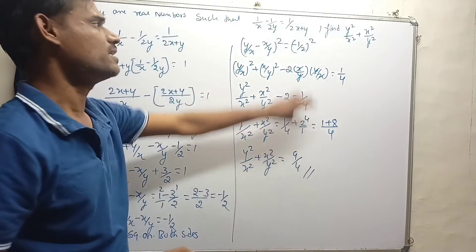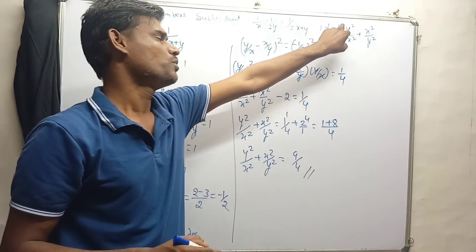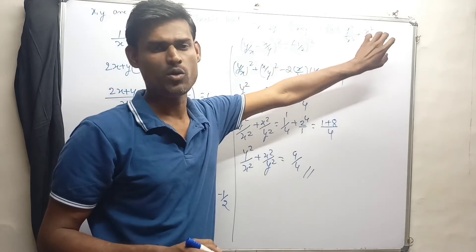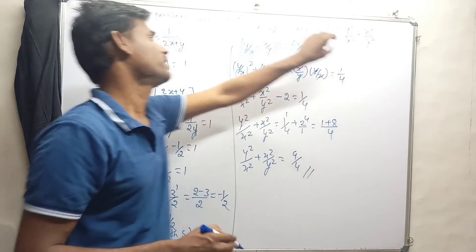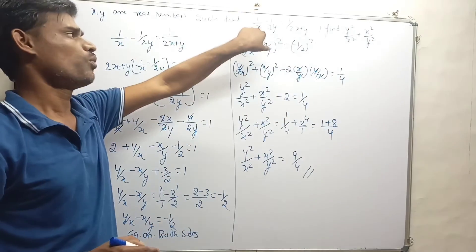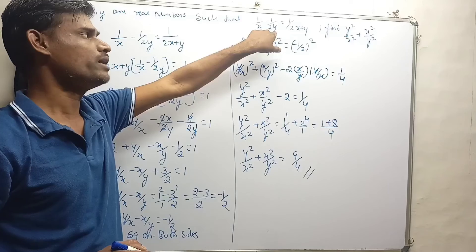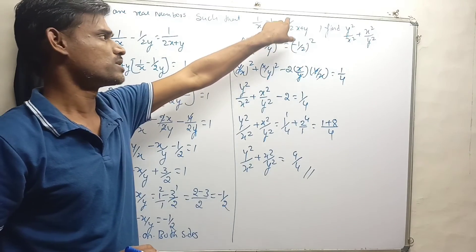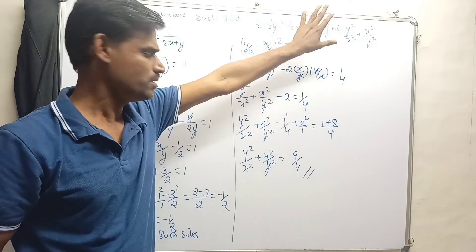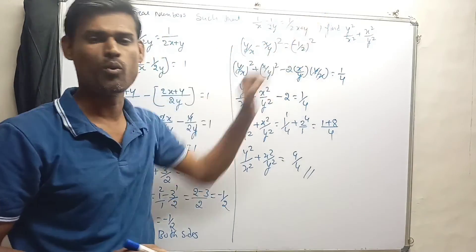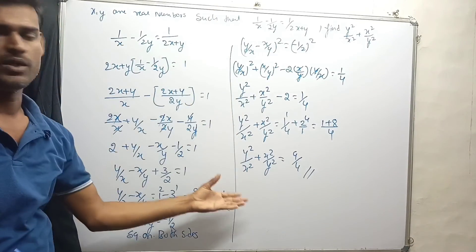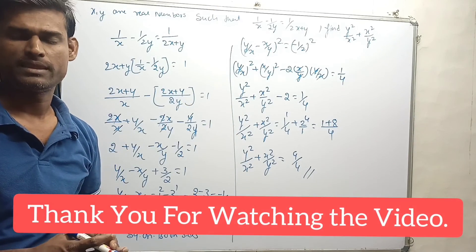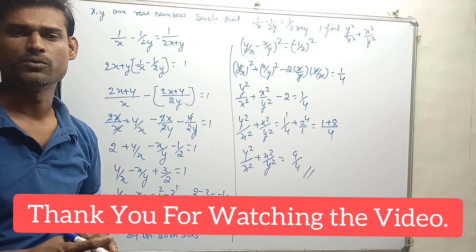That is the solution to y²/x² + x²/y², given that 1/x minus 1/(2y) equals 1/(2x + y). I hope you understand this solution. Thank you for watching the video.